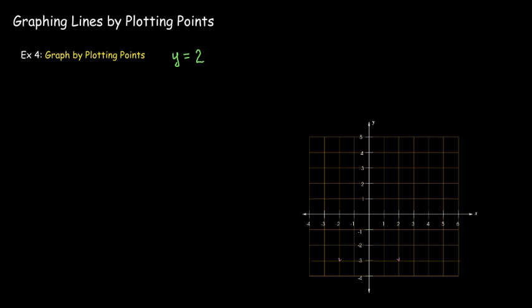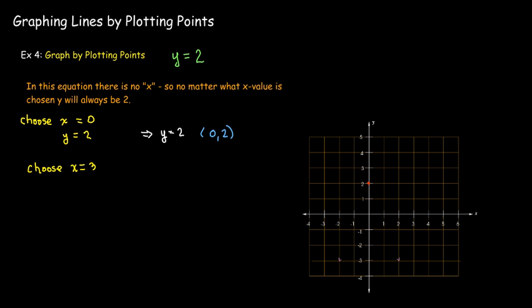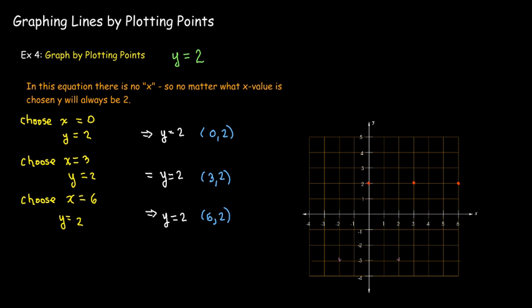Here's an interesting equation: y equals 2. There is no x. And so what that tells me is that I can choose any x value I want, and the y coordinate, or the y value, is always 2. So if I choose x equals 0, y will be 2. If I choose x equals 3, y will be 2. And if I choose x equals 6, y will be 2. And I get a horizontal line here, and that makes sense. Its slope should be 0. So let's go ahead and plot these 3 here. We can just draw a straight line and put our arrowheads on.